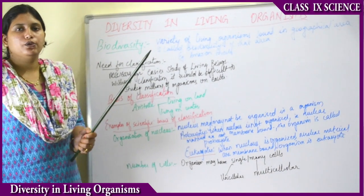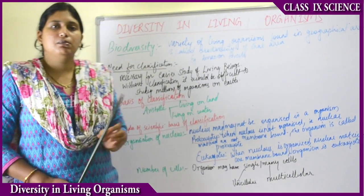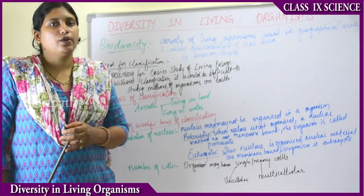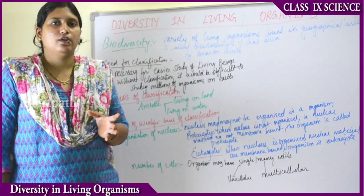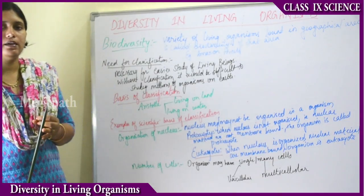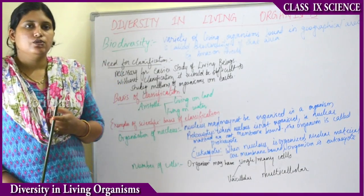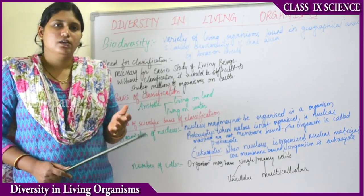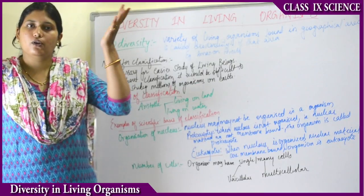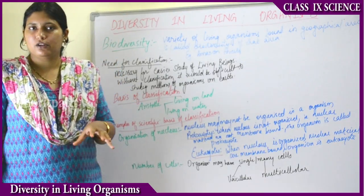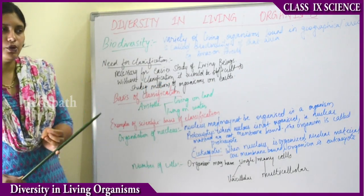The chapter we are going to study is 'Diversity in Living Organisms.' Diversity means variety — there is a lot of variety in the living organisms around us. The main groups of living organisms are human beings, plants, animals, as well as microscopic organisms. Talking about trees, some trees live for thousands of years and grow to a great height, whereas some trees are of very short height.